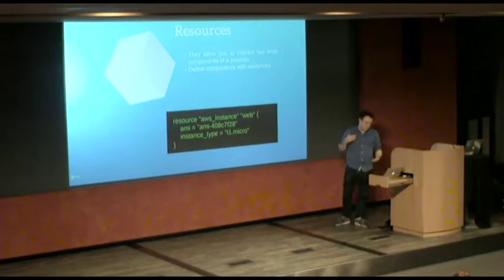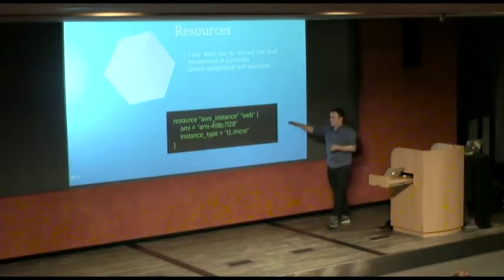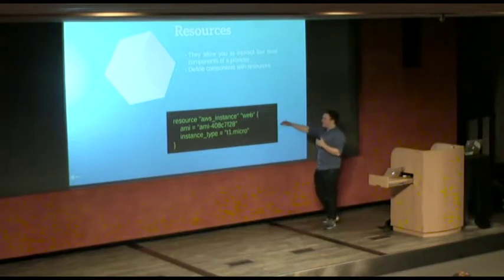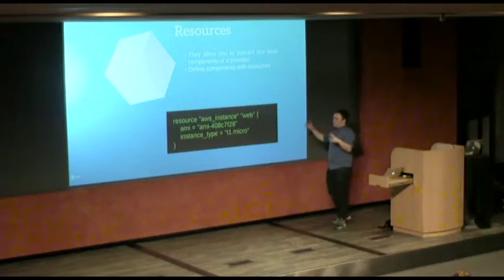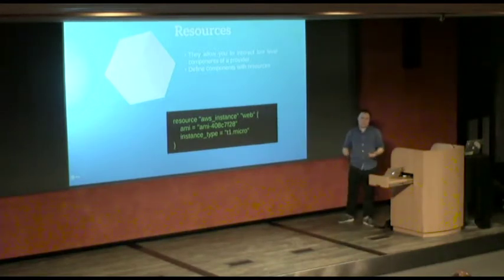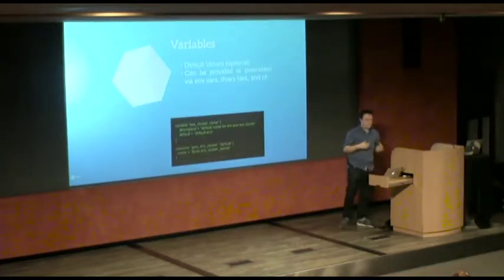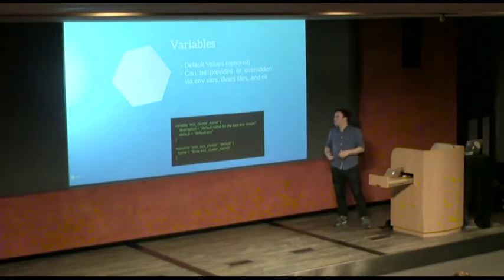And it means you can then use the resources that make up that provider to interact with the low level components of that. So for example, I can now create an AWS instance in this much code and say, I've already initialized the AWS provider with the right credentials and the rest of it. And now I can go and create an instance. And it's called web in the scoping of the module.